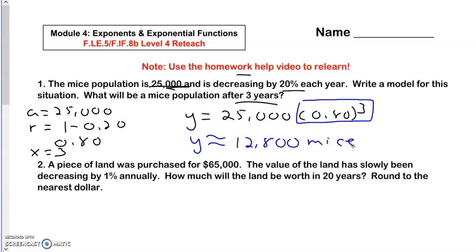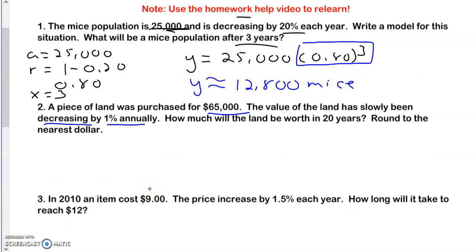Taking a look at the next problem. A piece of land was purchased for $65,000. The value of the land has slowly been decreasing 1% annually. How much will the land be worth in 20 years? Round to the nearest dollar.